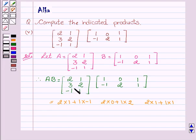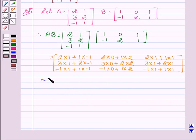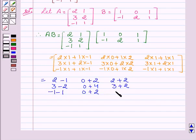Similarly, we will write for the second row and third row. This is equal to 2, minus 1, 0, plus 2, 2, plus 2, 3, minus 2, 0, plus 4, 3, plus 2, minus 1, minus 1, 0, plus 2, minus 1, plus 1.